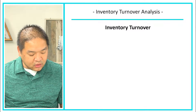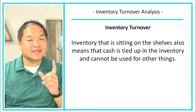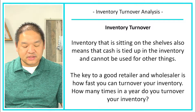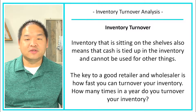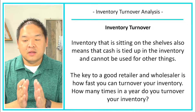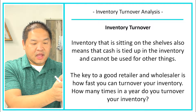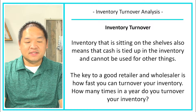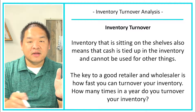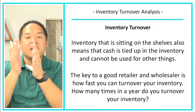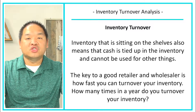Inventory turnover is what we're looking at. Inventory sitting on the shelf means cash is tied up and cannot be used for other things — that's not a good thing. The key to a good retailer and wholesaler is how fast you can turn over your inventory. Turnover means: today I buy inventory, tomorrow I put it on the shelf, a couple days later I sell it, and then I get back my cash. If I go through it 12 times a year, that means it's taking me 30 days from buying to selling and collecting cash.